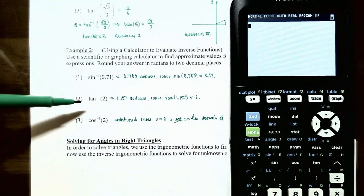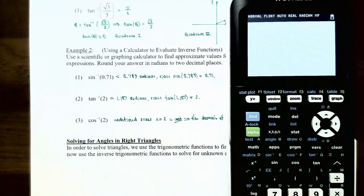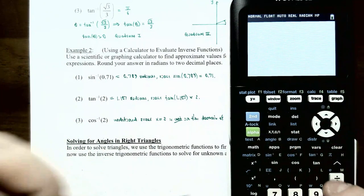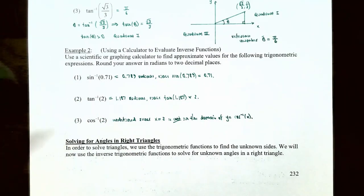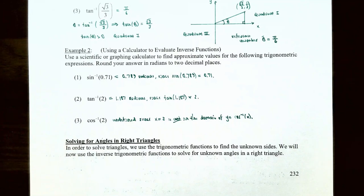Number 2: inverse tangent of 2. We want the angle theta between negative pi over 2 and pi over 2 where tangent of theta = 2. Press second and then the tangent button to get inverse tangent of 2, which returns approximately 1.107 radians. Number 3: inverse cosine of 2. However, x = 2 is not in the domain of the inverse cosine function — the domain is [-1, 1]. With an input of 2 outside the domain, inverse cosine of 2 is an undefined value.